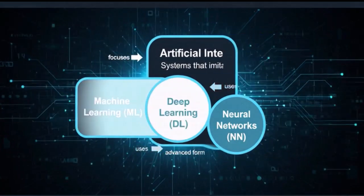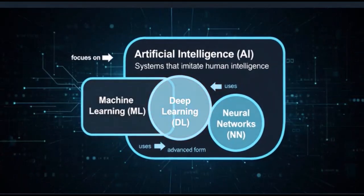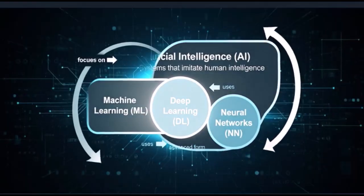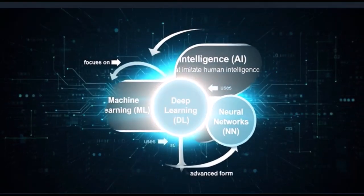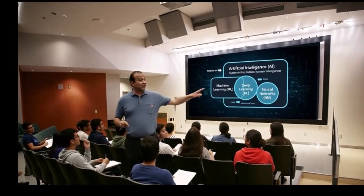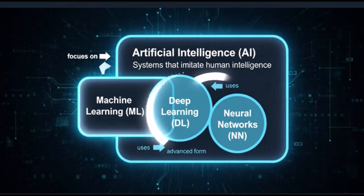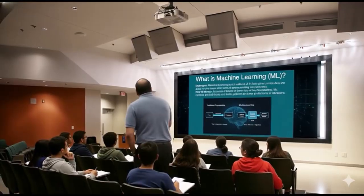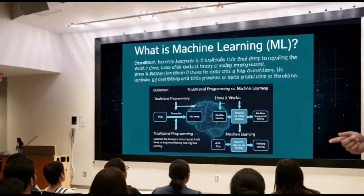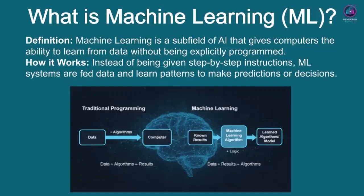The two you'll hear about most frequently, and which we'll delve into shortly, are machine learning and deep learning. Closely intertwined with these are neural networks, which serve as a foundational technique for how much of modern AI actually functions. These three areas are key to understanding the capabilities and advancements we see in AI today. Moving on to slide three, we dive into a crucial component of AI: machine learning, or ML.